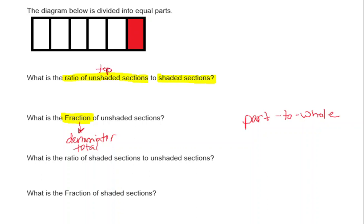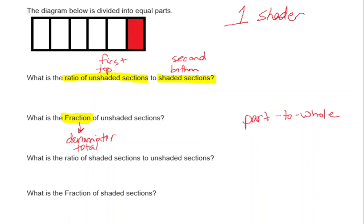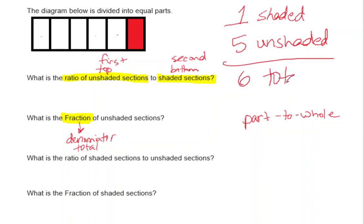In this example: 'what is the ratio of unshaded sections to shaded sections?' — order matters. The first term goes on top and the second goes on the bottom. You can also write a ratio as something to something, so the order still matters. We can count and see that we have one shaded section and five unshaded sections.